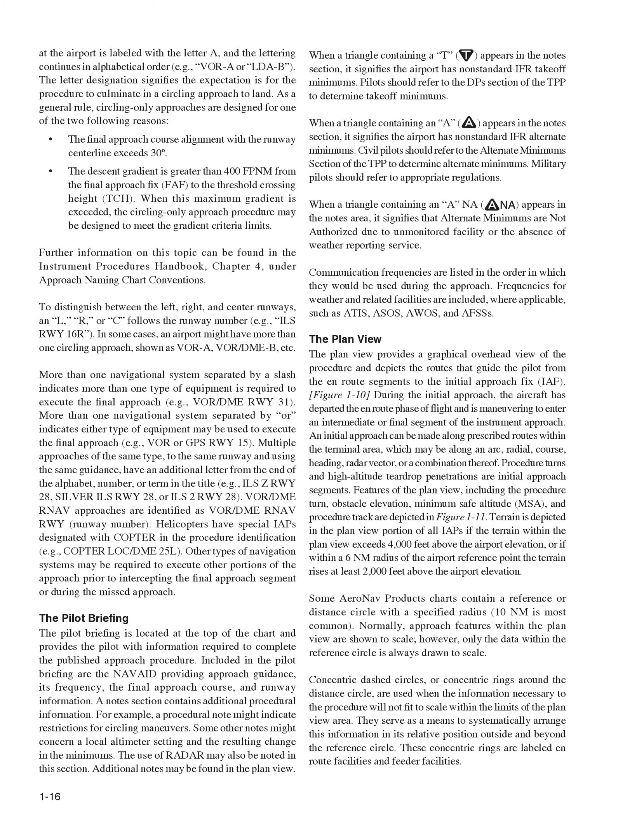Multiple approaches of the same type, to the same runway and using the same guidance, have an additional letter from the end of the alphabet, number, or term in the title, for example ILS RWY 28, Silver ILS RWY 28, or ILS2 RWY 28. VOR/DME-B approaches are identified as VOR/DME RWY, runway number. Helicopters have special IAPs designated with 'Copter' in the procedure identification, for example Copter LOC/DME-25L.